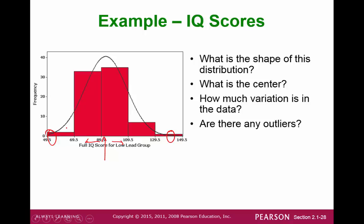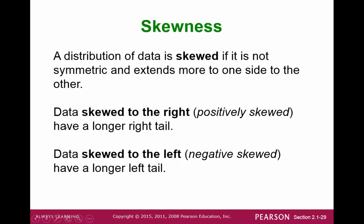We can get a lot more precise in defining outliers. Not all of our data will be bell shaped. In some cases, we will have distributions that are skewed. A skewed distribution will have a longer tail on one side.